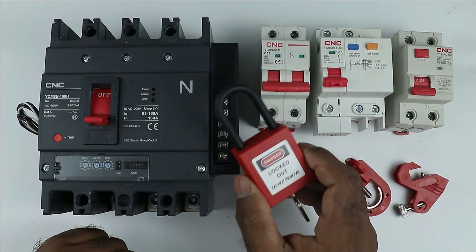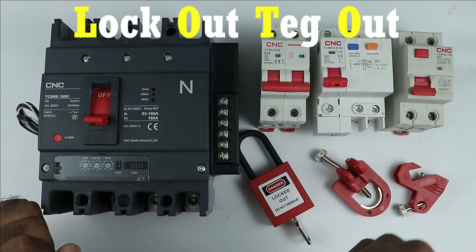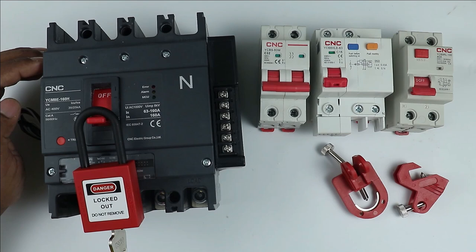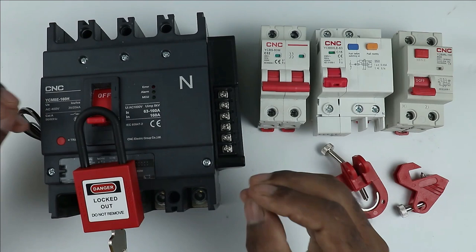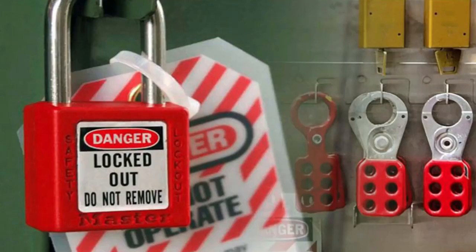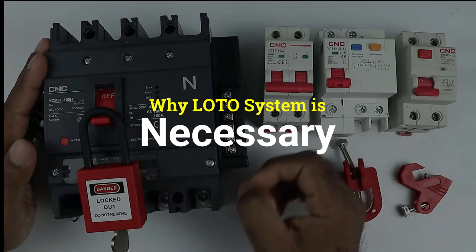Full form of LOTO is Lockout Tagout. Means you can lock any type of breaker like this. After putting a lock, you can hang a tag. Right now I don't have a tag, so I am showing a picture here. If you are going to work on any breaker, then a lock is to be placed there. Along with this, a tag is to be hanged, which shows you are working. Why this is necessary, let's understand.